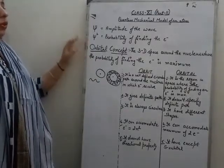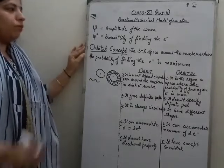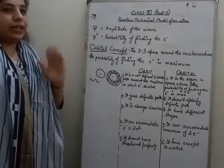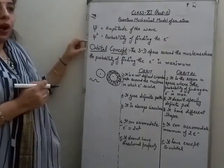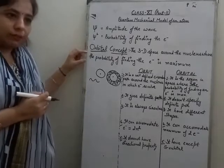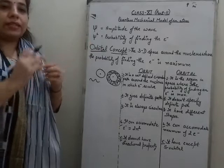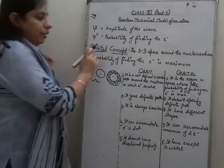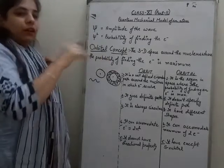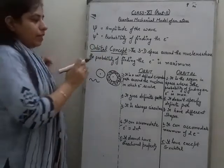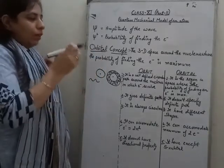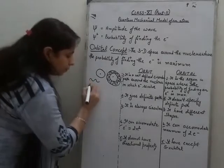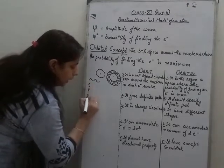The electron propagates in the form of a wave three-dimensionally — in x, y, and z axes — meaning the orbitals, which are the regions of maximum probability, are also extended three-dimensionally in x, y, and z planes. Accordingly, there are three different shapes along each axis. Orbitals are of four types: s, p, d, and f orbitals.